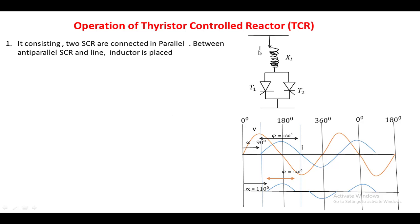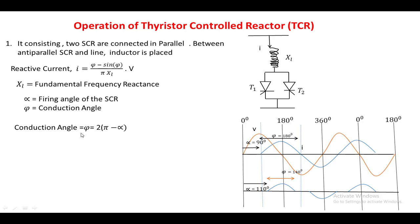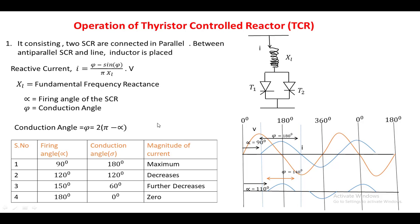The expression for the fundamental current is: I = (psi − sin(psi)) / (π · XL) · V, where psi is the conduction angle, XL is the inductive reactance, and V is the applied voltage. As shown in the table, as the firing angle increases the conduction angle decreases, and the current magnitude decreases from maximum to zero. By changing the firing angle between 90 and 180 degrees, the reactive current magnitude can be varied continuously.